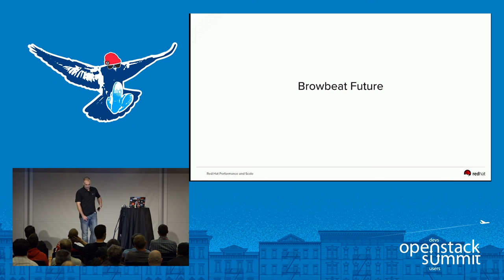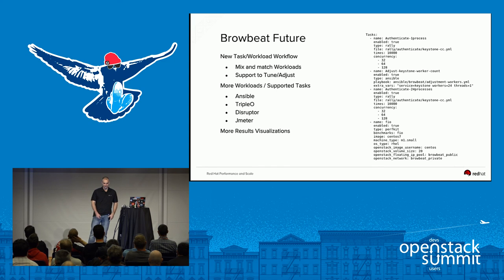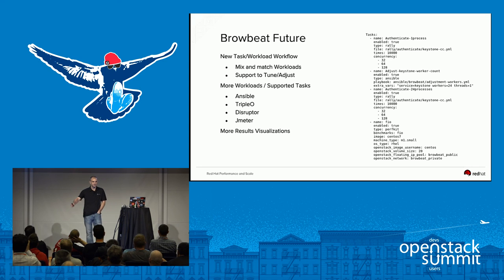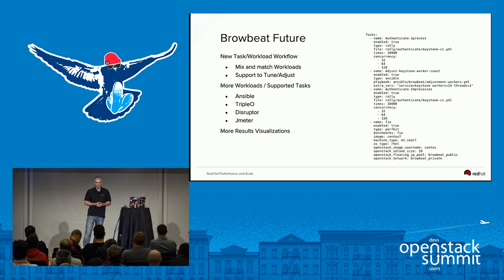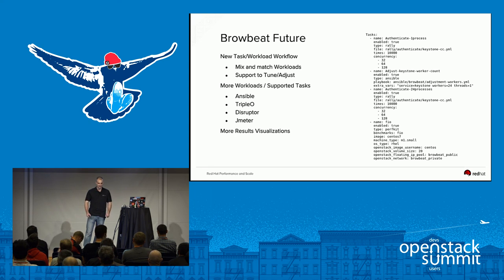BrowBeat future. The biggest thing we want to go for is the ability to mix and match workloads - boot 20 instances onto the cloud, run some PerfKit benchmarks, boot 20 more. Right now it's very static: run Rally, then PerfKit, then Shaker. We also want to be able to create workloads that run Ansible, tapping into our Ansible playbooks to adjust the cloud, make changes, rerun those same benchmarks, helping with automation and seeing what tunings look like in both our results graphs and our system metrics graphs.